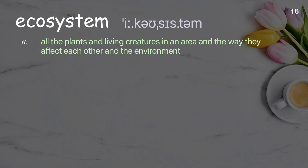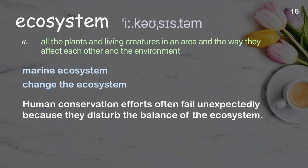Ecosystem: all the plants and living creatures in an area and the way they affect each other and the environment. Examples: marine ecosystem; change the ecosystem. Human conservation efforts often fail unexpectedly because they disturb the balance of the ecosystem.